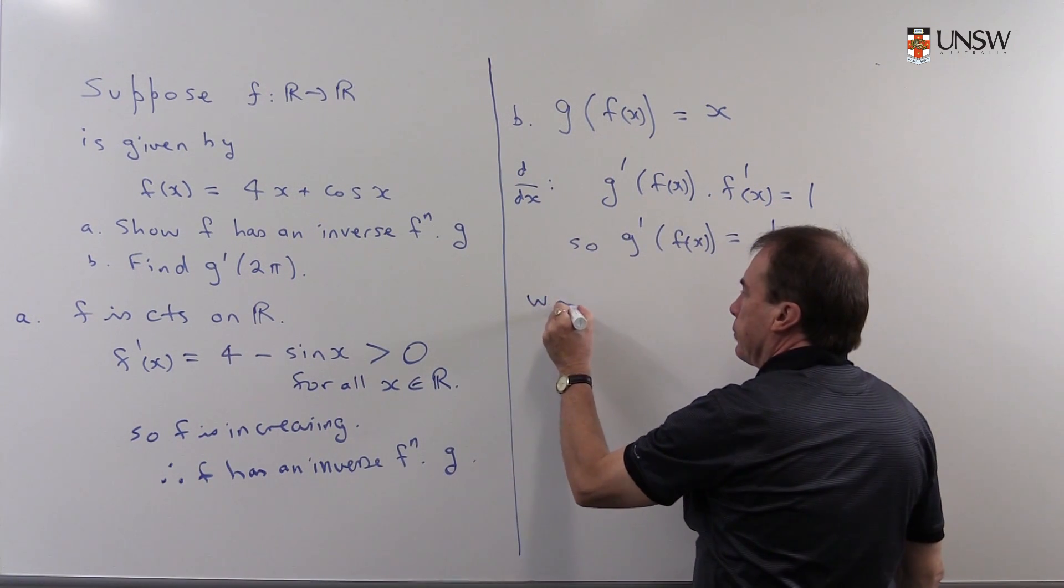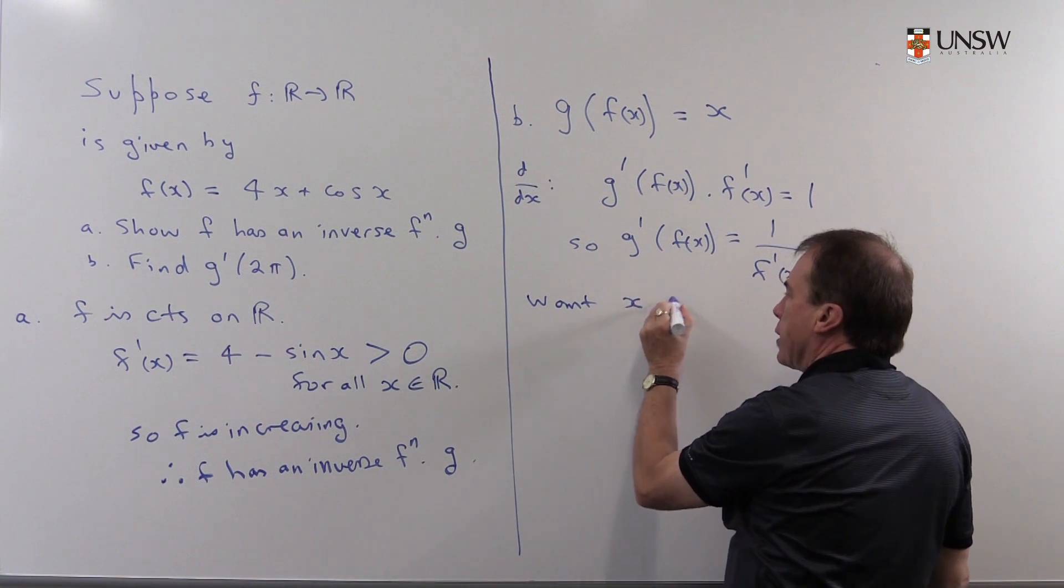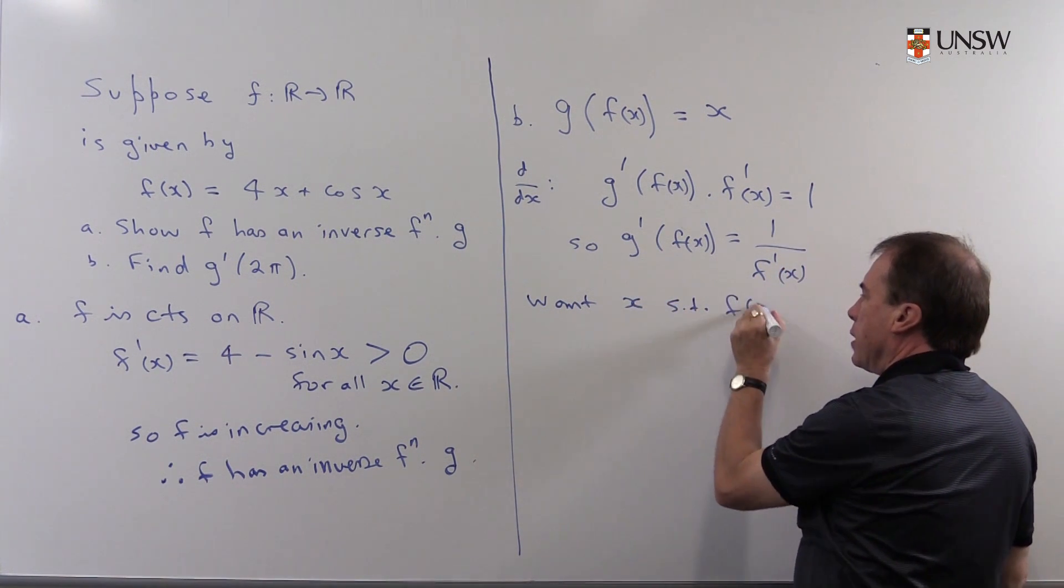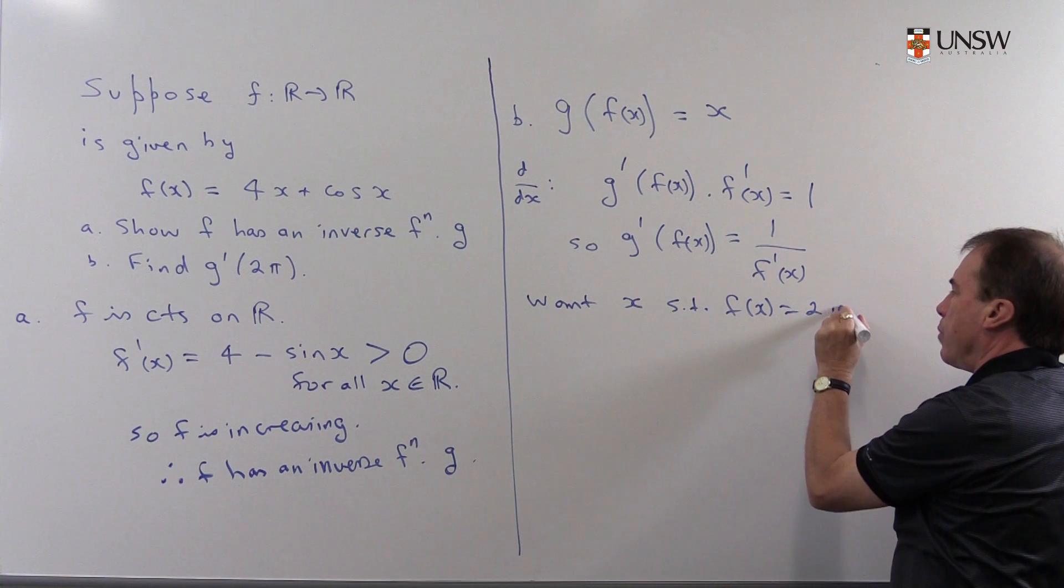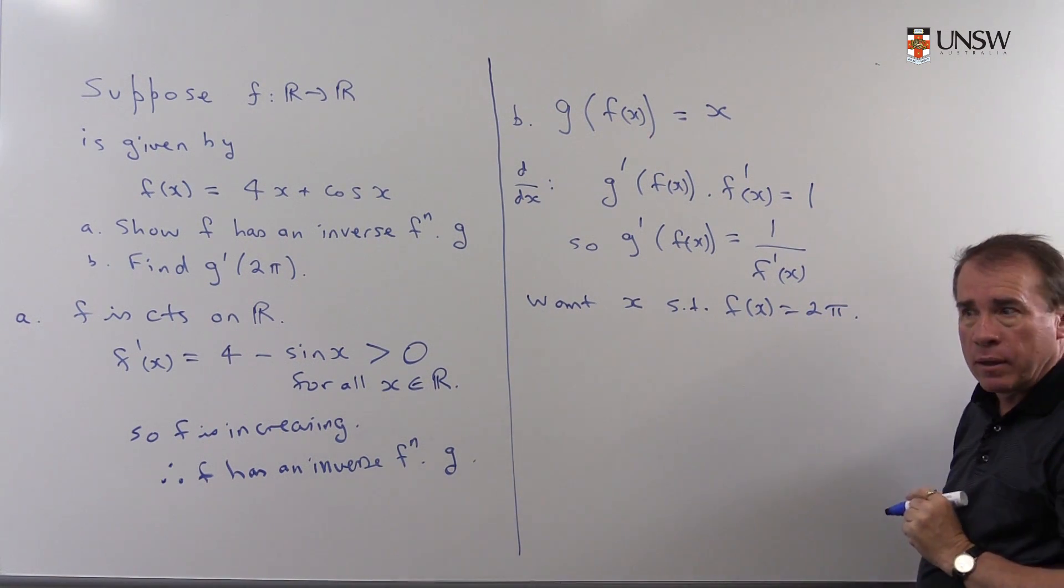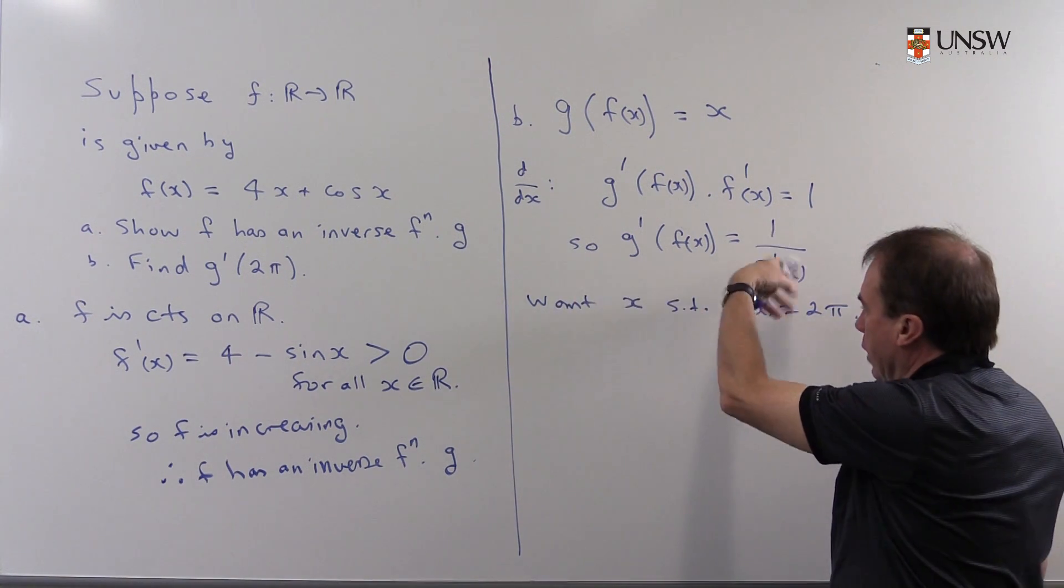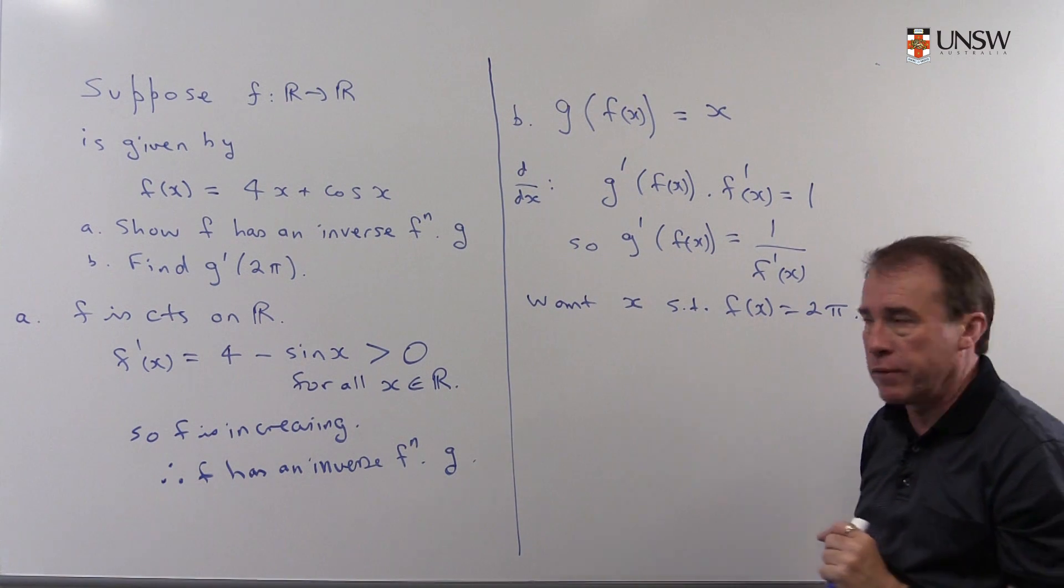So we want an x such that f(x) is equal to 2π. Once I get that, then I can plug it in, and I can work out what the derivative is.